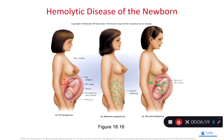You might ask: what if dad also has a negative blood type? If both mom and dad are negative, genetically the baby can't have a positive blood type. But we still give mom the RhoGAM shot regardless, because sometimes paternity is uncertain. It's very cheap and far better than risking a stillborn child, so we play it safe and always administer the shot to mothers with negative blood types.